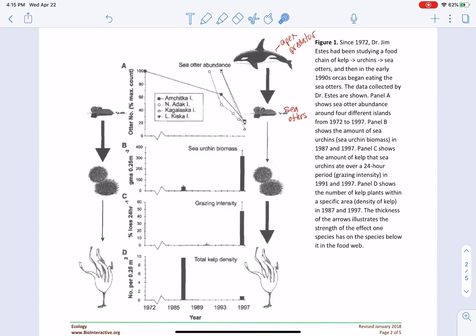Now, if orcas are present, this large arrow indicates that they will eat a lot of sea otters. If orcas eat a lot of sea otters, the sea otter population will decrease.